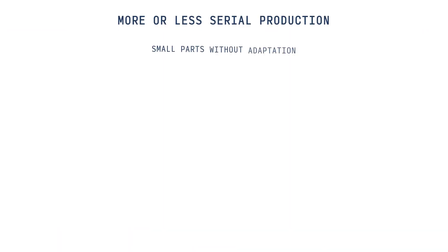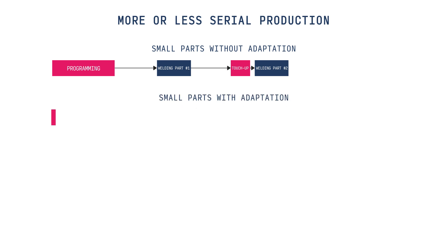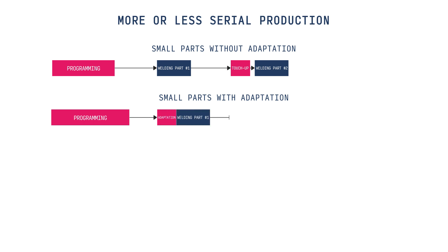Let's discuss some typical use cases. The first one is the welding of small serial parts. Programming time is not the biggest concern as the batch size is huge. The touch-up procedure depends on the specifics of the part, the quality of preparation, and whether it's possible to create a high-quality fixture. So the complexity and frequency of touch-ups may vary. If touch-ups and rework are not a pain point for you, then there is no reason to increase cycle time by using adaptation. So yes, Sean is absolutely right that cycle time can be longer.